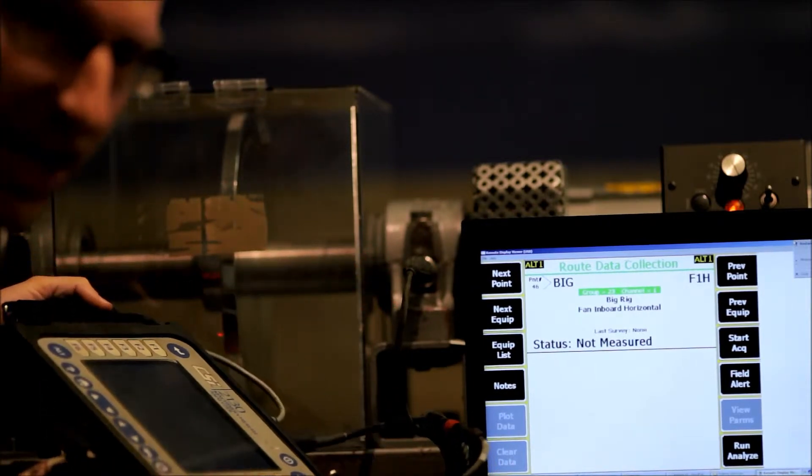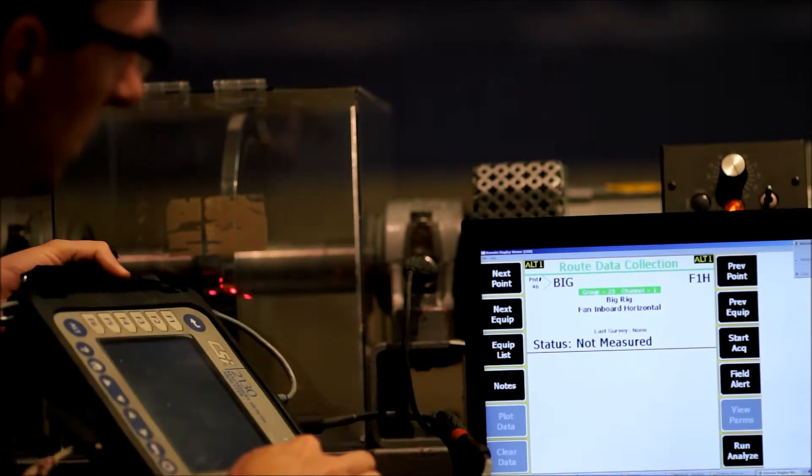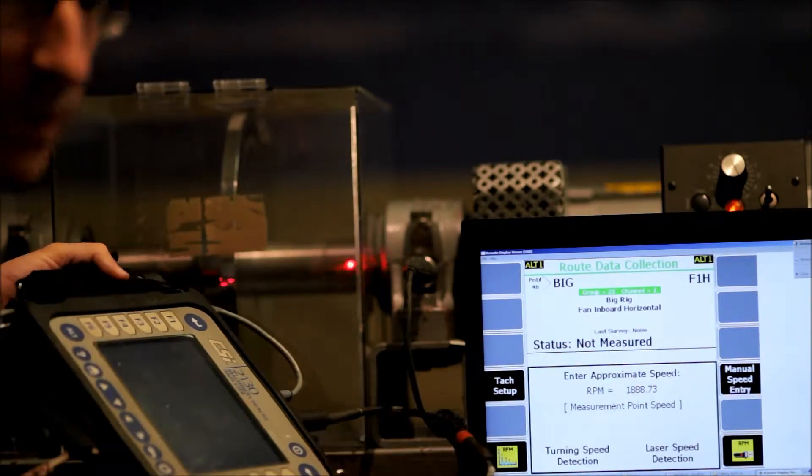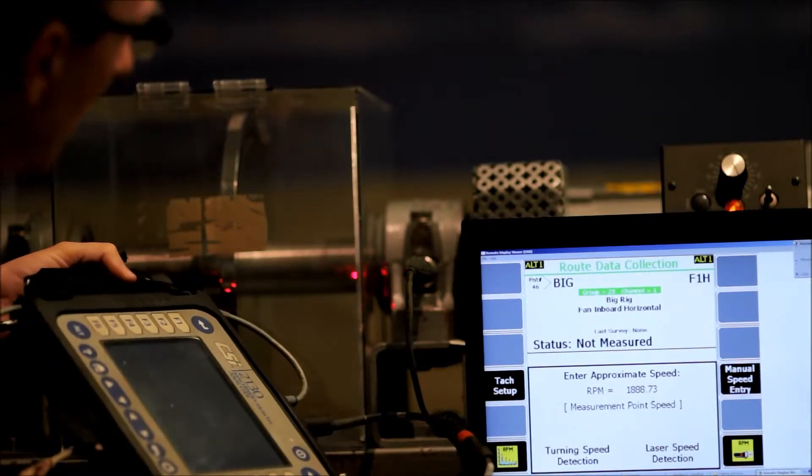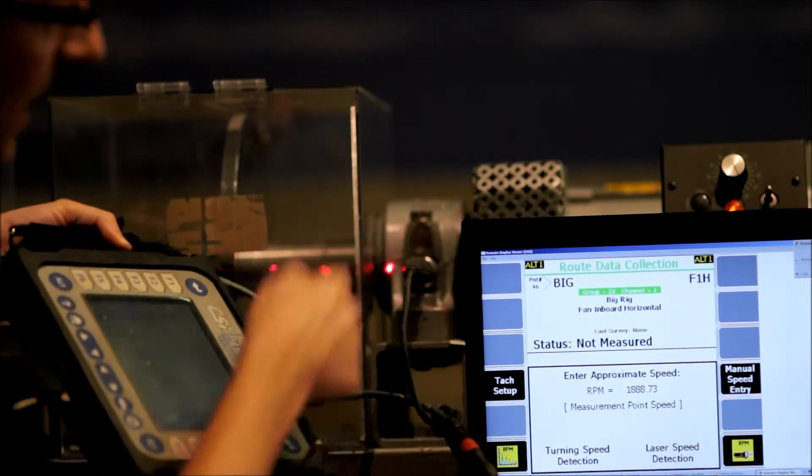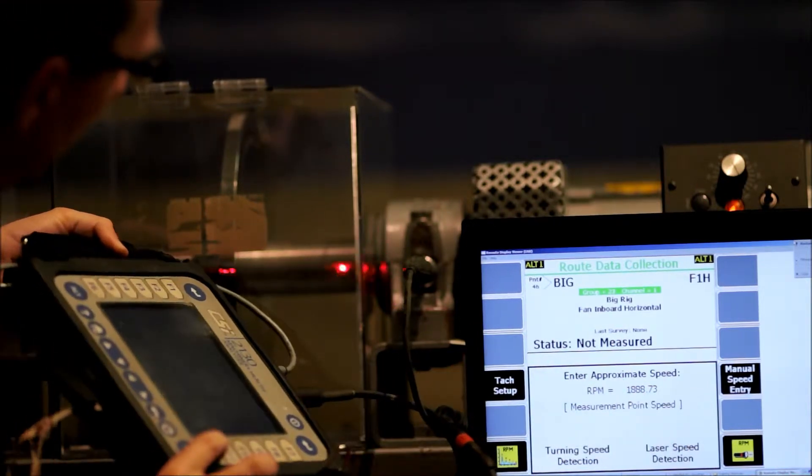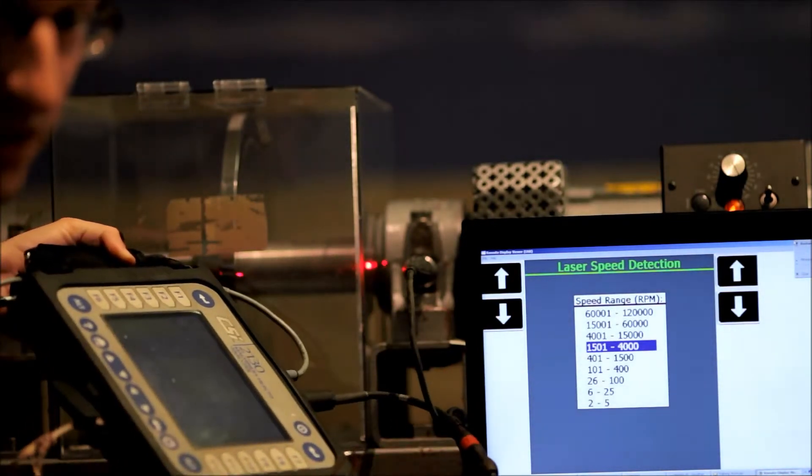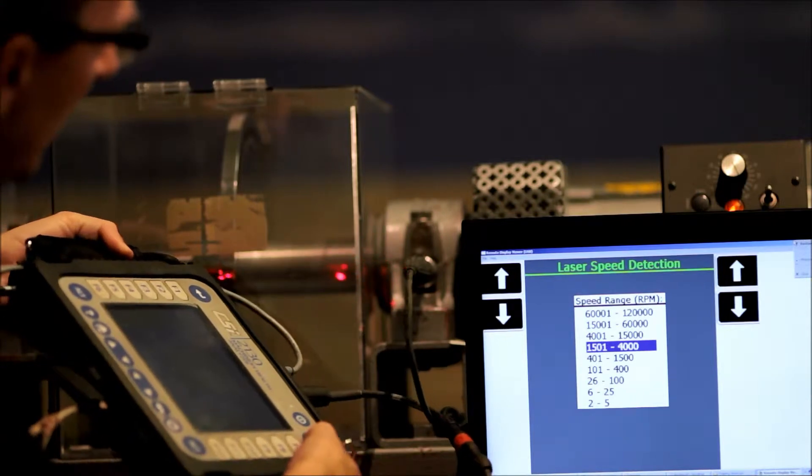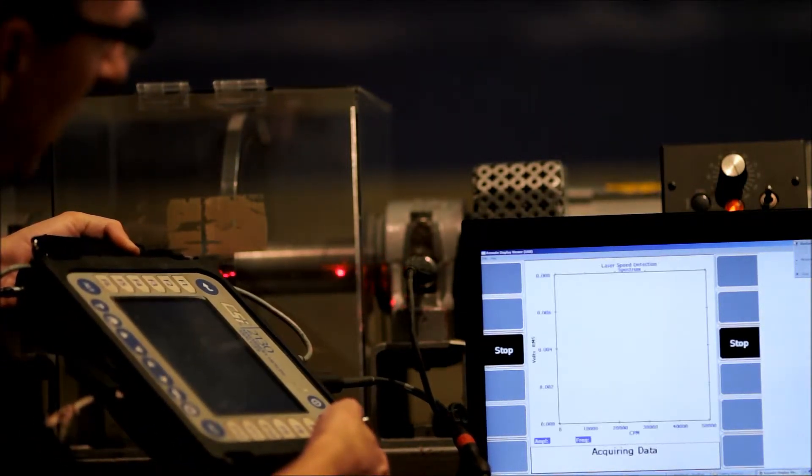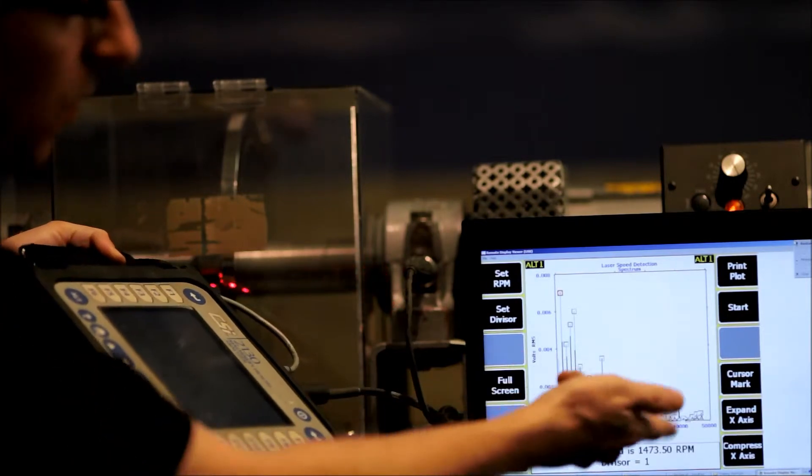So the first thing to do, I'm going to hit enter to start the data acquisition. It's prompting me for a speed of this shaft. So what I have to do is point the laser at the shaft and hit laser speed detection. It's going to give an approximate speed range. I hit enter to start data recording. It's going to spend a few seconds acquiring data from the laser beam, and it's acquired the correct speed.